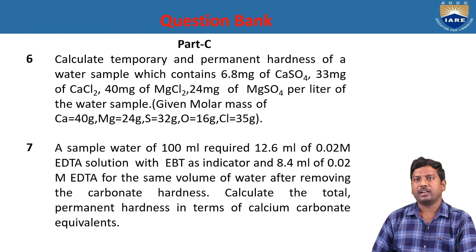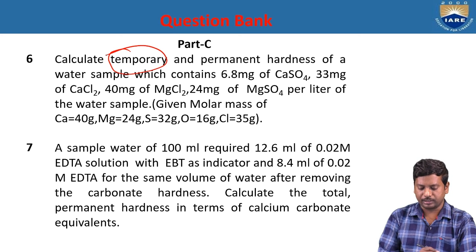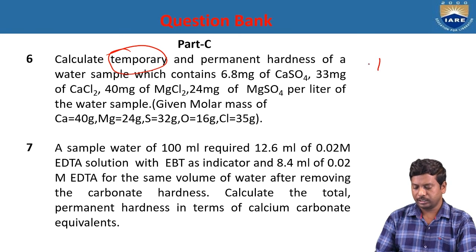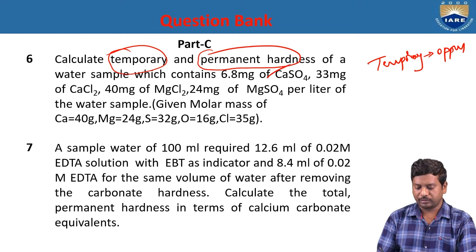Problem 6: Calculate temporary and permanent hardness of water containing calcium sulfate 6.8 mg, calcium chloride 33 mg, magnesium chloride 40 mg, and magnesium sulfate 24 mg per liter. Given molar masses: Ca = 40, Mg = 24, S = 32, O = 16, Cl = 35. There is no salt causing temporary hardness in this problem, so temporary hardness = 0 ppm. Permanent hardness is caused by calcium sulfate, calcium chloride, magnesium chloride, and magnesium sulfate.